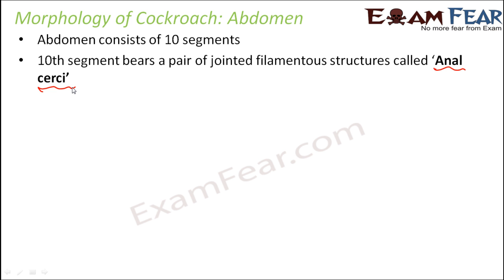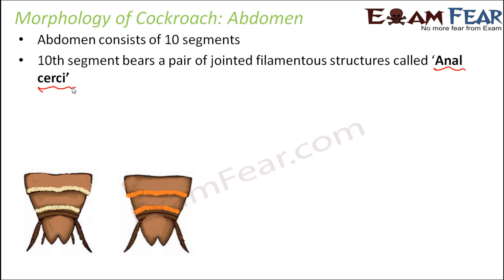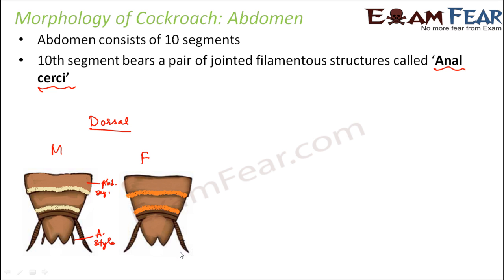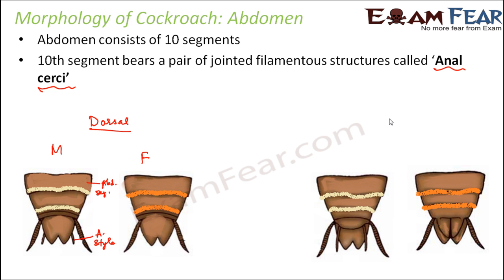The lowermost part of the abdomen consists of the genital organs — both female and male genital parts are part of the abdomen. Looking at the dorsal and ventral views of male and female cockroaches, there is one additional structure in the male cockroach called the anal style, which is not present in the female. Each of these segments is known as an abdominal segment, and the anal style can be seen more clearly in the ventral view.